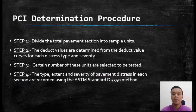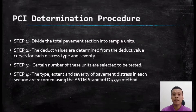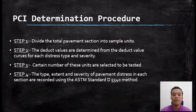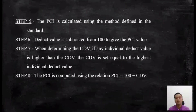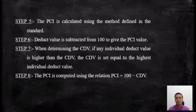PCI determination procedure: Step 1 — divide the total pavement section into sample units. Step 2 — determine deduct values from the deduct value curve for each distress type and severity. Step 3 — select certain units to be tested. Step 4 — record the type, extent, and severity of pavement distress using ASTM standard D5340. Step 5 — calculate the PCI using the method defined in the standard. Step 6 — subtract the deduct value from 100 to give the PCI value. Step 7 — when determining the CDV, if any individual deduct value is higher than the CDV, set the CDV equal to the highest individual deduct value. Final step: PCI equals 100 minus CDV.